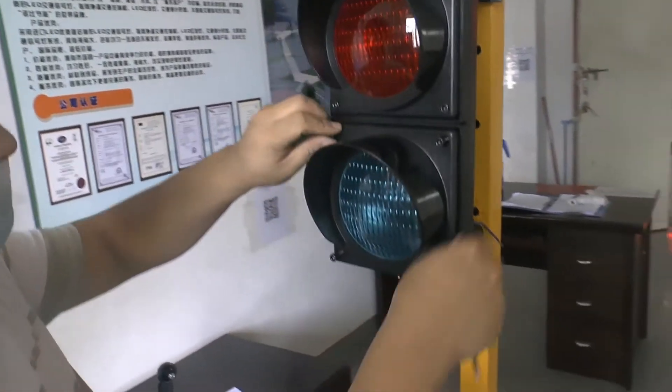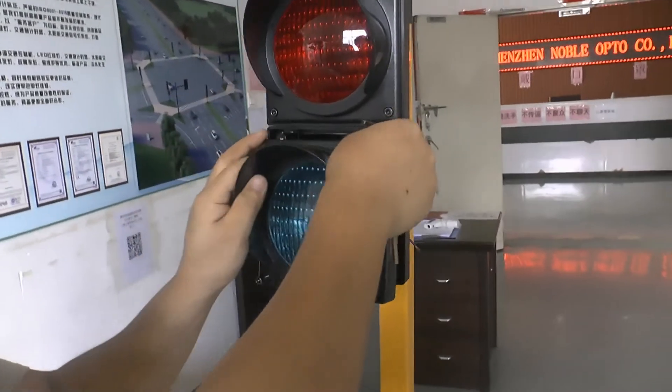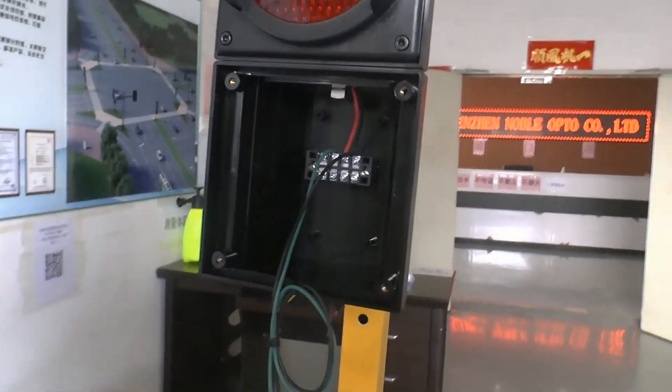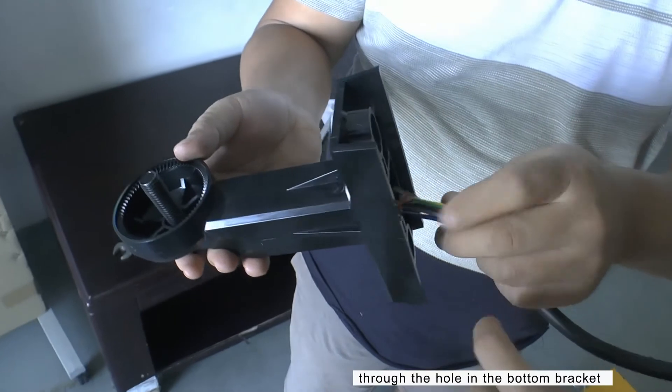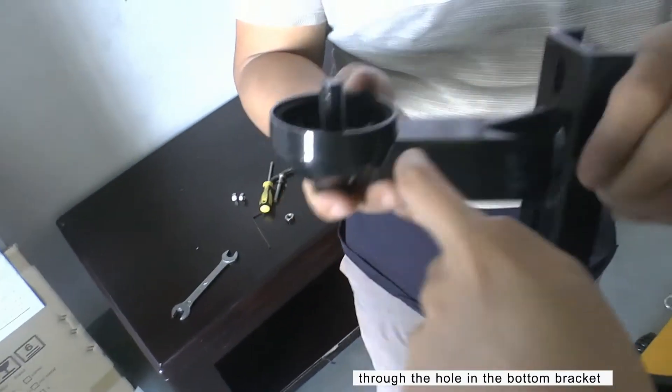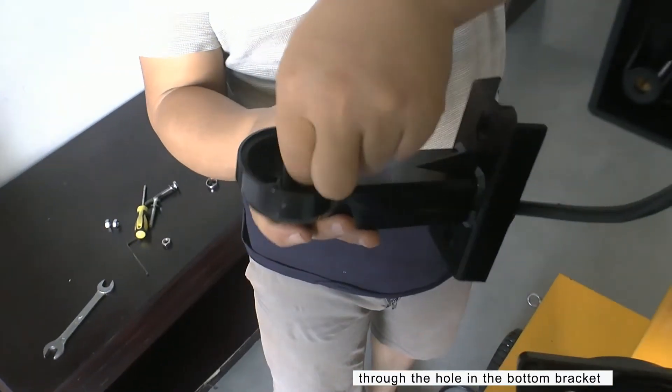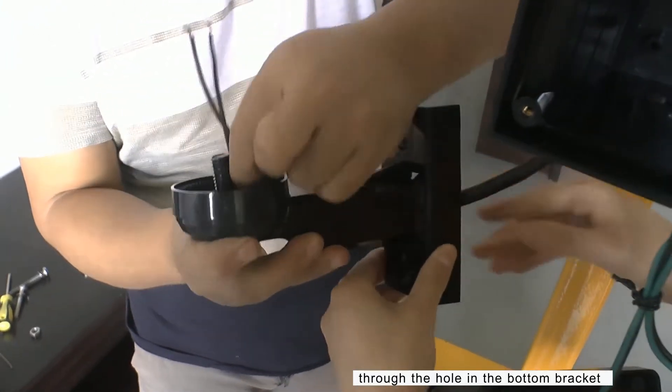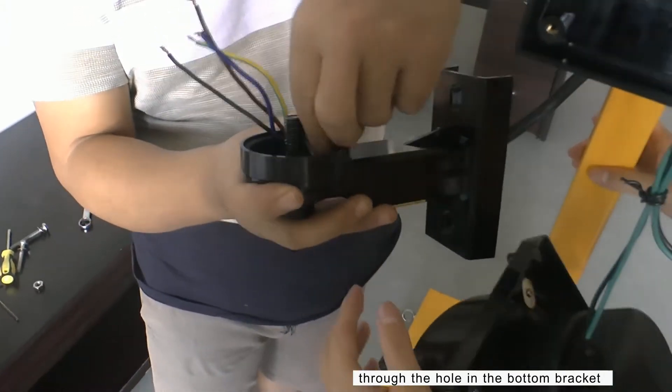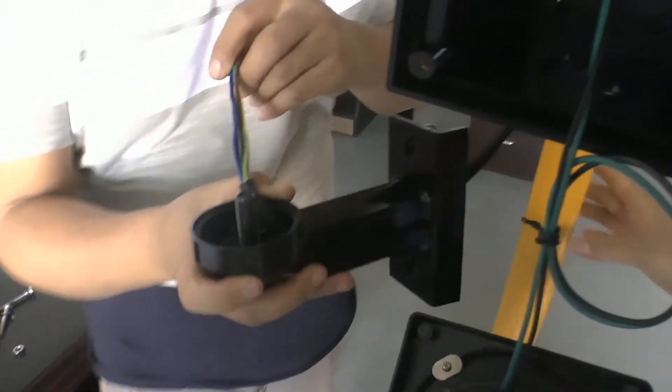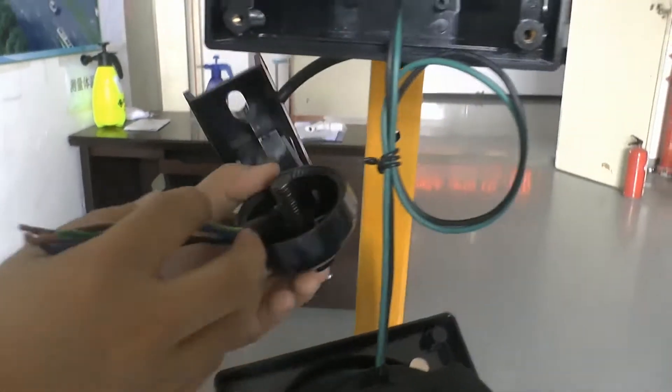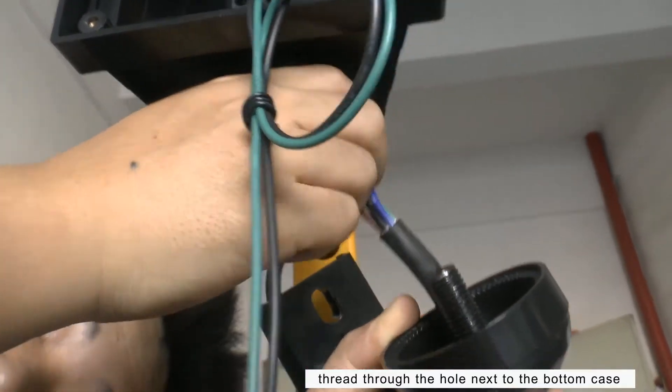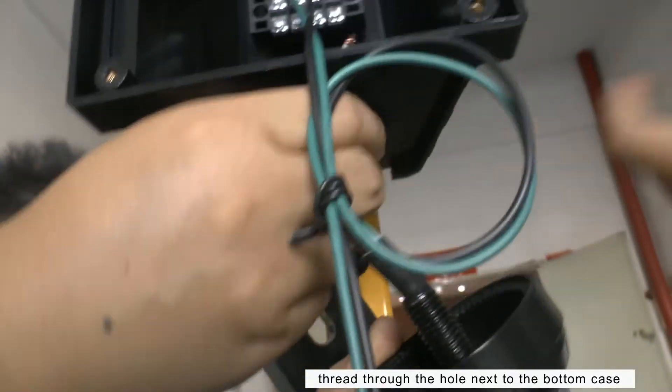Then, open the second line board. Please insert the traffic signal line wire through the bracket. Next, thread the signal line wire through the bottom of the traffic signal line.